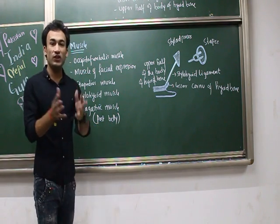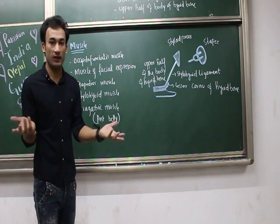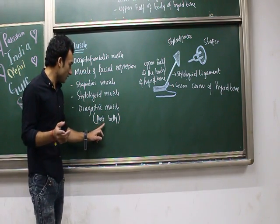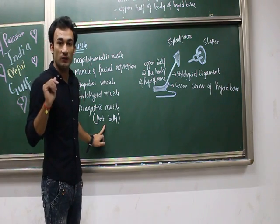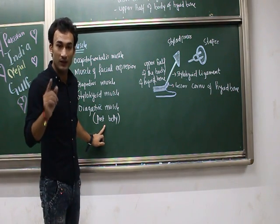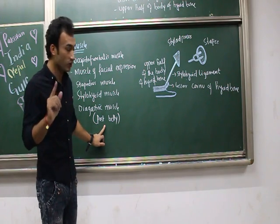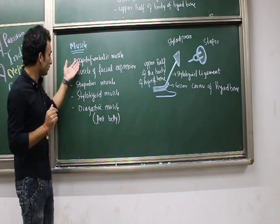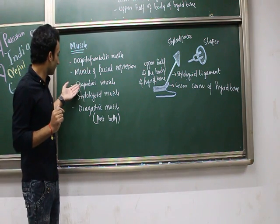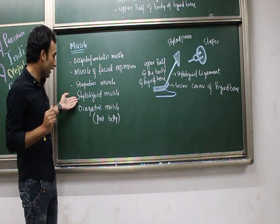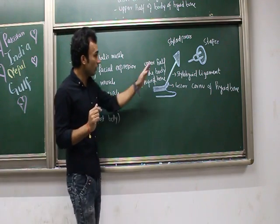The fleshy part of a muscle is called the belly. The posterior belly of the digastric muscle is derived from the second pharyngeal arch, while the anterior belly of the digastric muscle is derived from the first pharyngeal arch — remember this point. So to summarize the muscles: occipitofrontalis, muscles of facial expression, stapedius muscle, stylohyoid muscle, and the posterior belly of the digastric muscle.